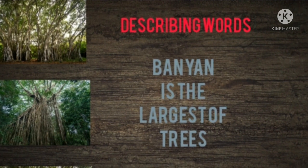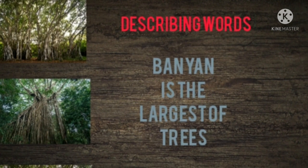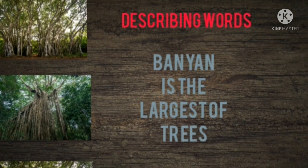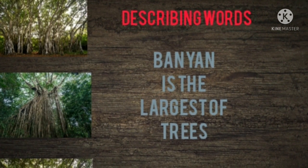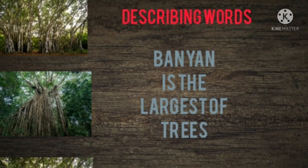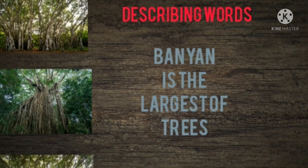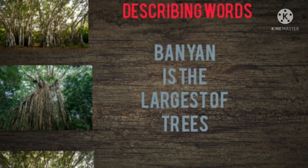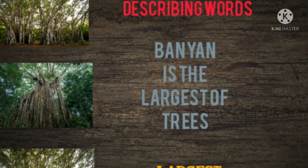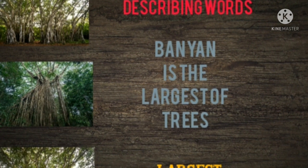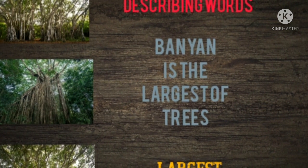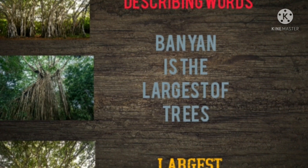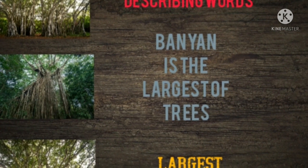Look at the first line: 'The banyan is the largest of trees.' Banyan is the tree. How is the banyan tree? It is the largest tree. So our poet described the banyan tree as 'largest.' Underline the describing word 'largest' in the first line.